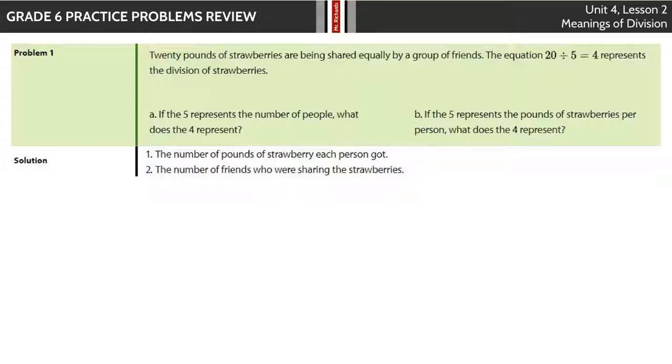In our first problem, 20 pounds of strawberries are being shared equally by a group of friends. The equation 20 divided by 5 equals 4 represents the division of strawberries. In question A, if the 5 represents the number of people, what does the 4 represent? Let's look at this here. We have 20 pounds of strawberries divided by 5 people, and we know that's going to equal 4. But if 20 pounds of strawberries divided by 5 people, that's going to be 4 pounds per person that each person gets.